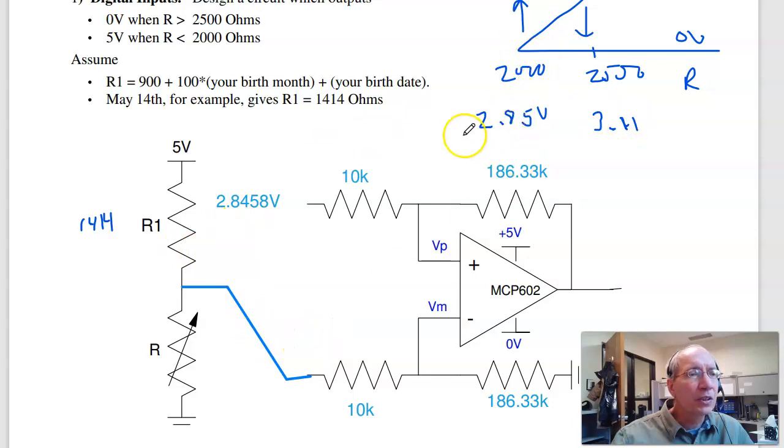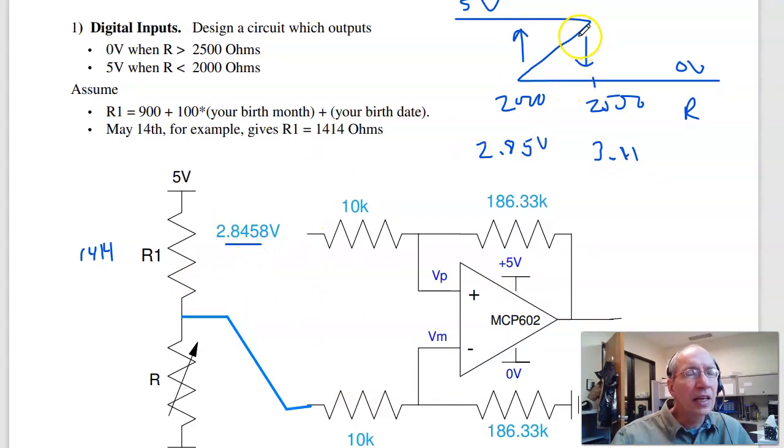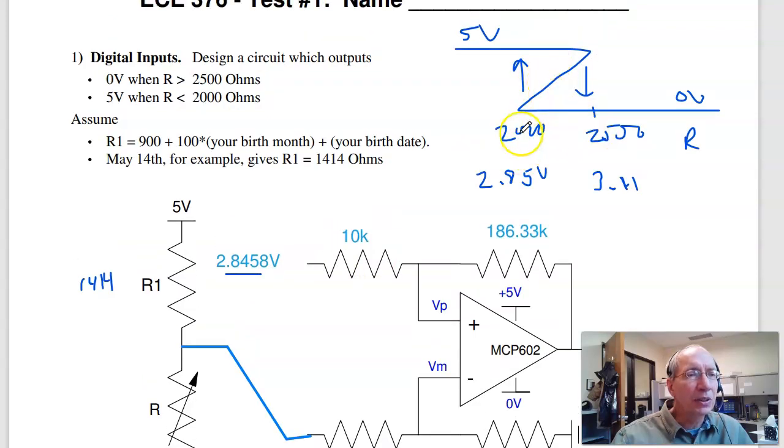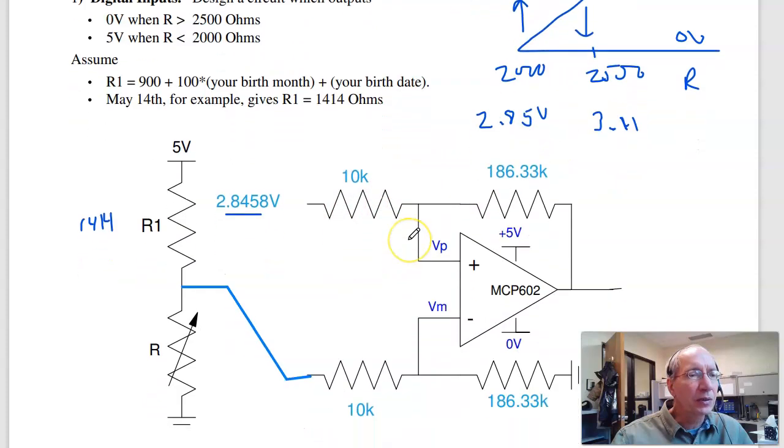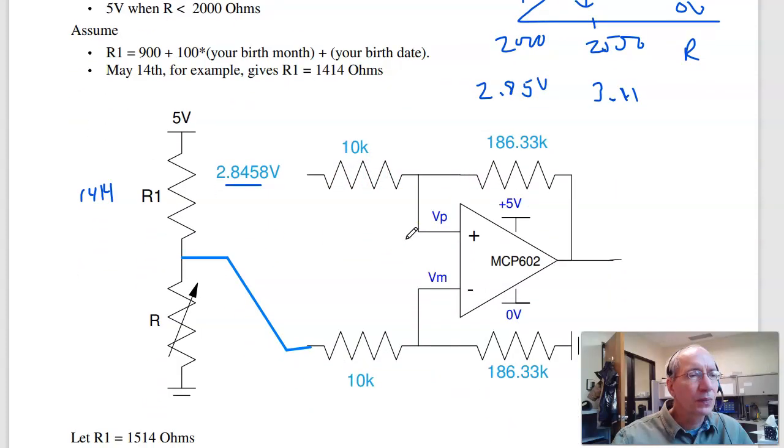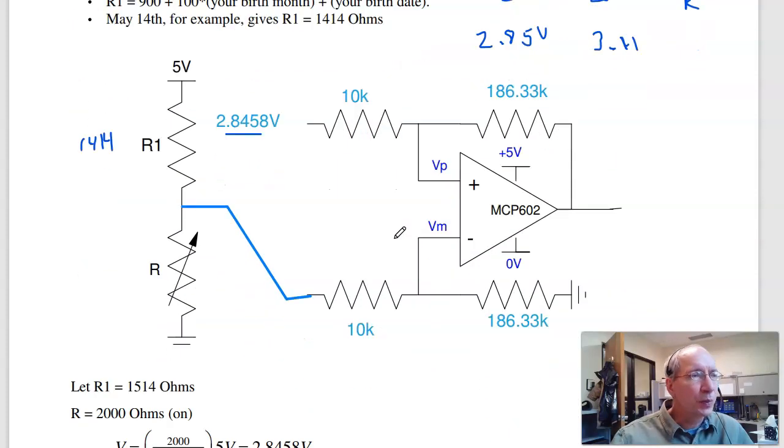The on voltage is the offset and the slope is the gain. The output changes by 5 volts as the input changes by 0.26 volts, gives you a slope of 18. Make that 18 to 1. So that's the Schmitt trigger for problem number one.